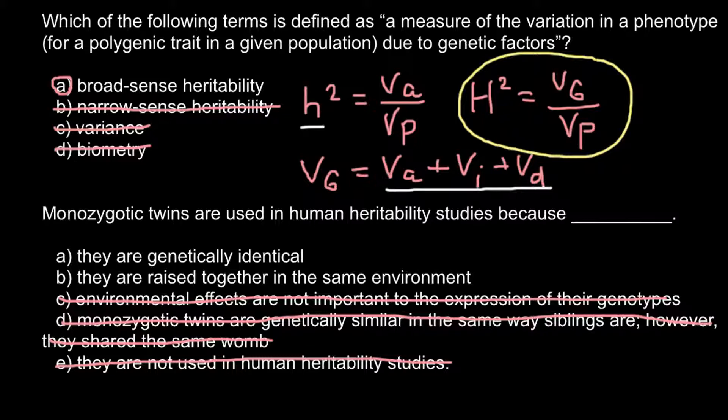Answer B — they are raised together in the same environment — looks like a true answer, but this is not what is most important for such studies. What is really important is that two monozygotic twins share 100% of their genes — they are genetically identical. So whenever we see any phenotypic variation in monozygotic twins, such variation would be due to the environment.